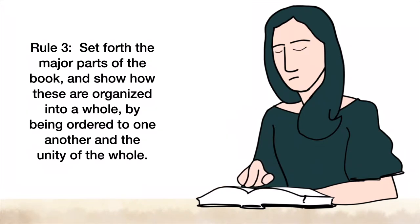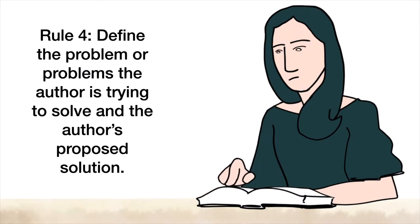Rule 3 states that one should outline the major parts of the book ordering them to what the book is about. Rule 4 states that one should define the problem the author is trying to solve and the author's proposed solution.